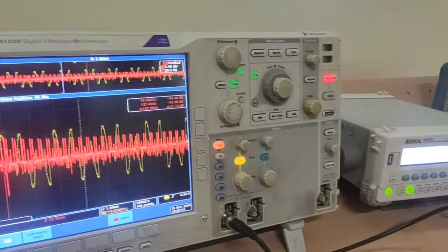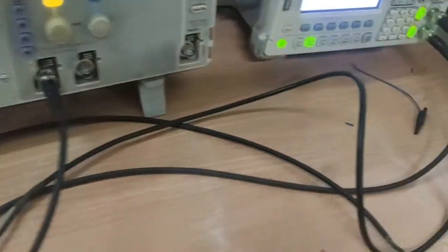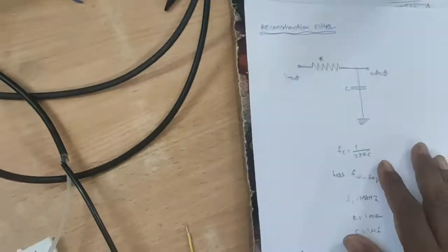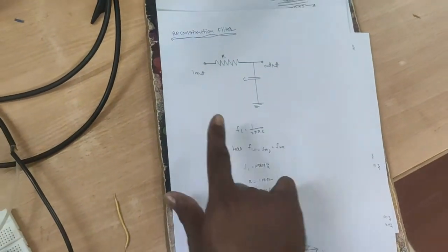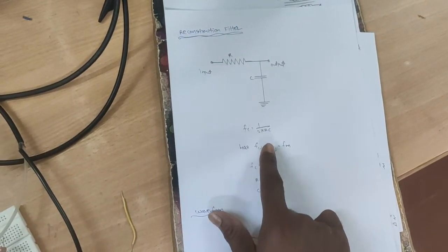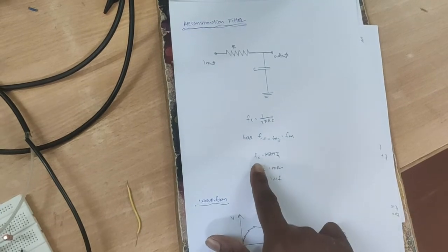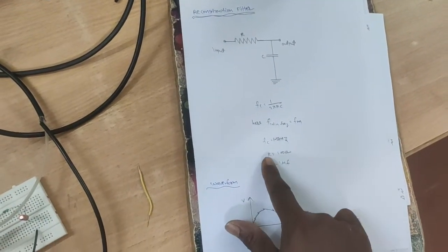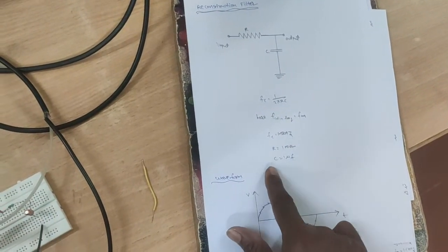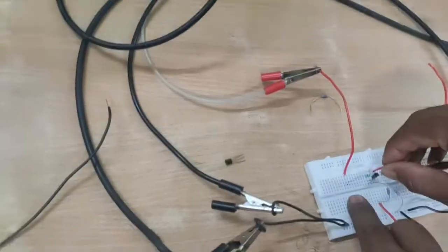Next, we go to the reconstruction filter. The cutoff frequency formula is Fc equal to 1 divided by 2π×R×C. Here the cutoff frequency Fc equals 1.5 kHz, the resistor is 100 ohms, and C is 1 microfarad. The same circuit is connected here.